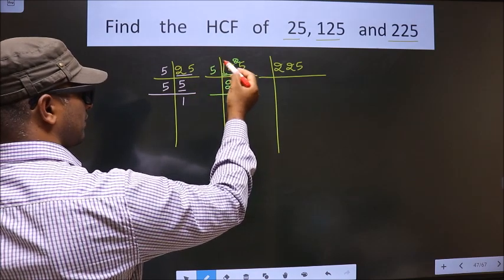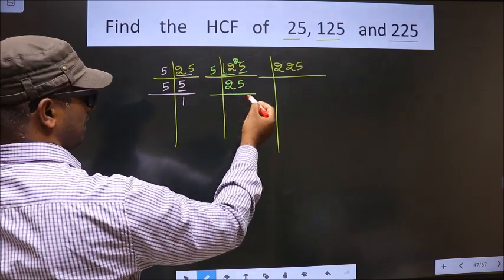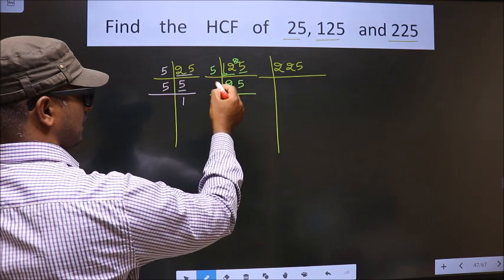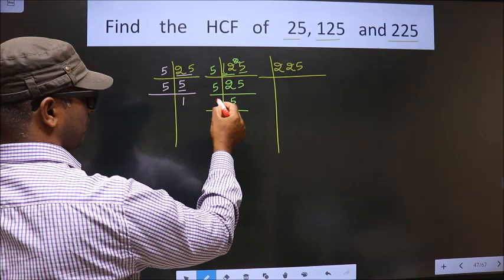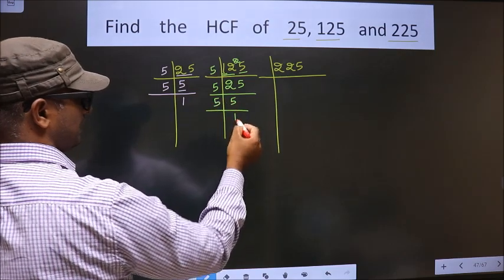Now when do we get 25 in 5 table? 5 times 5 is 25. Now here we have 25 that is nothing but 5 times 5. Now 5 is a prime number so we take 5 once 5.